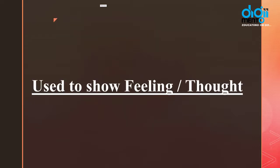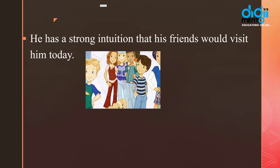We also use 'has'/'have' as a main verb to show some kind of feelings or thoughts. Us case mein bhi kisi tarah ki feelings ya thoughts ko dikhane ke liye hum 'has' or 'have' ko use karte hain as a main verb. Like: 'He has a strong intuition that his friends would visit him today' — usko ek bahut strong feeling ya intuition hai. Intuition hota hai jab aapko lagta hai ki haan aisa hoga. Toh us case mein hum 'has' ko as a main verb use karte hain.